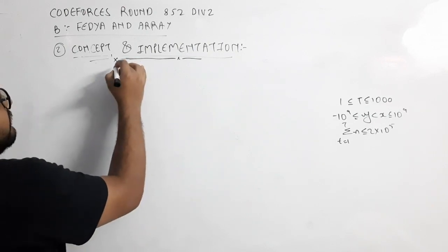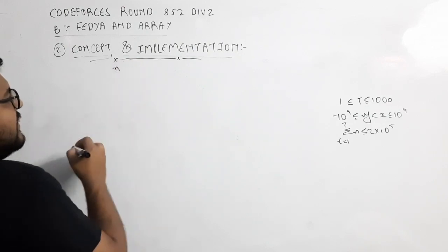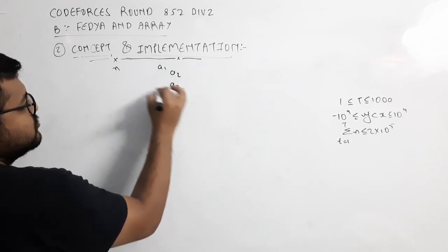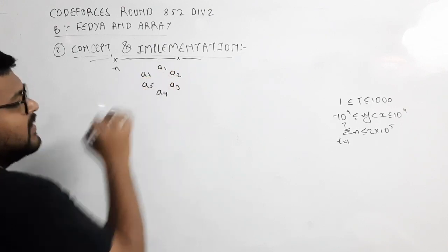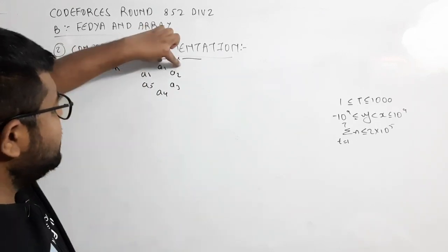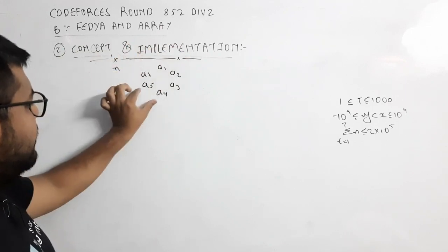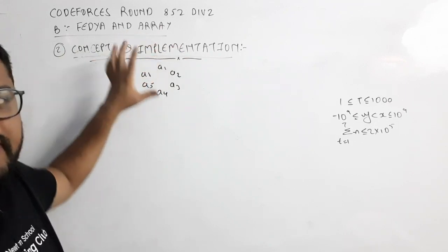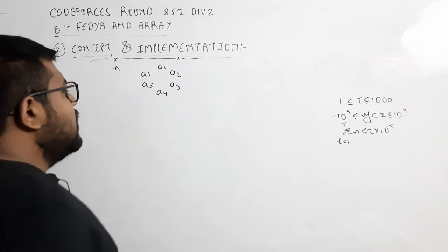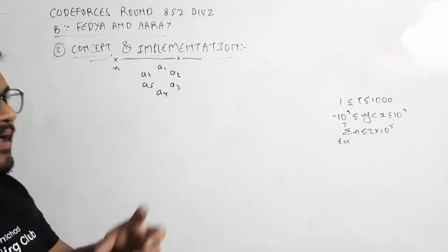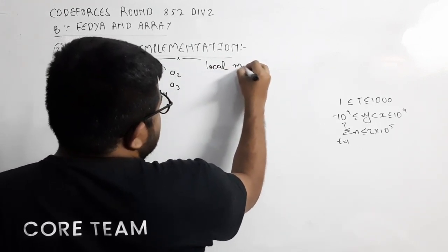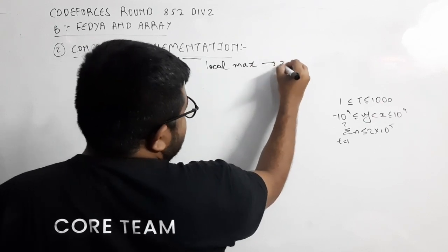Now for the concept and implementation: we need to find an array of minimum possible length n such that it is observed circularly. Let us take there are six elements. Second, the absolute difference between two consecutive elements must be 1 — meaning |a1-a2|, |a2-a3|, |a3-a4|, |a4-a5|, |a5-a6|, and |a6-a1| must all equal 1. The details given are that the sum of all local maxima in the array is x.